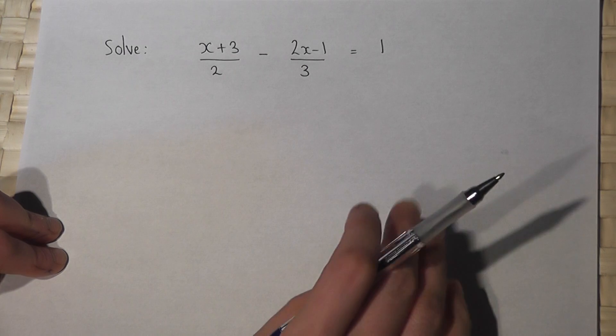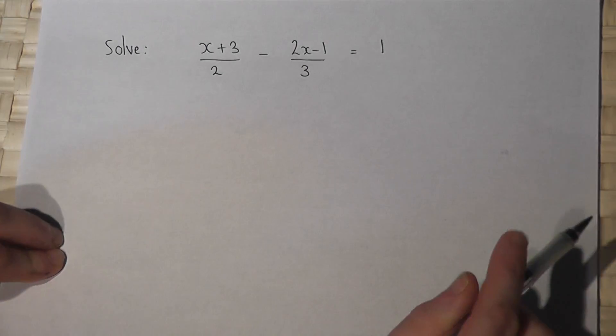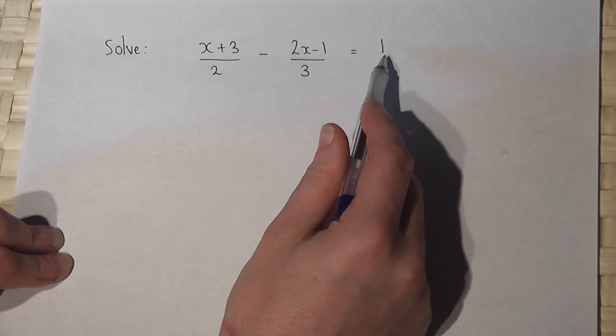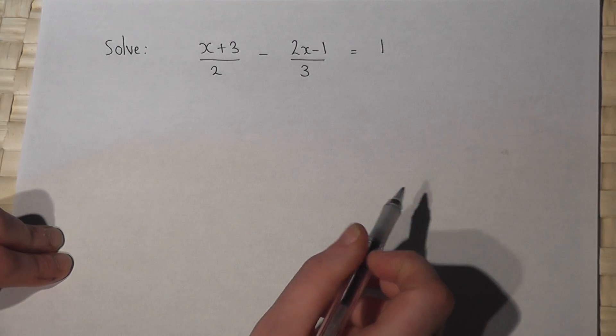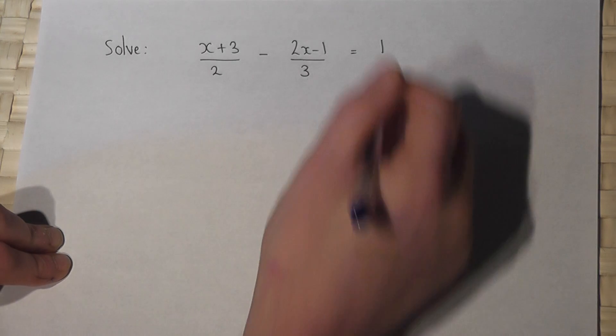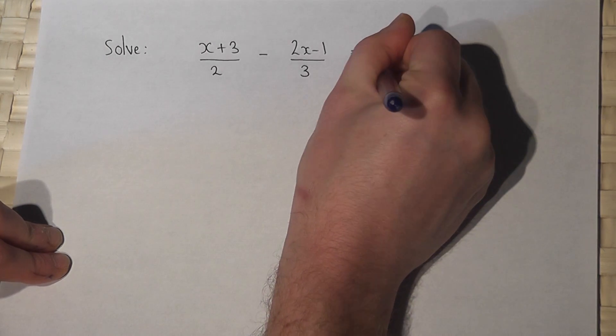Now there are lots of ways to solve this, but I believe that the best way is to write all three fractions over the same denominator. So this one is over one. One over one is one.